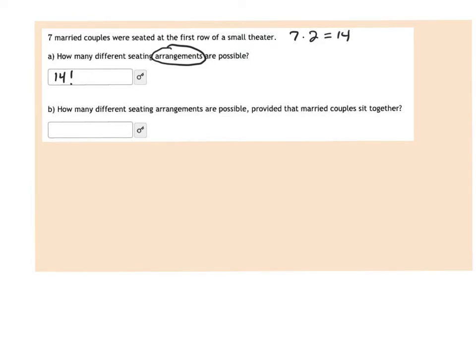The next one says: how many different arrangements are possible provided that married couples sit together? That one's a little bit different. So what I'm going to do is start by making seven blanks.